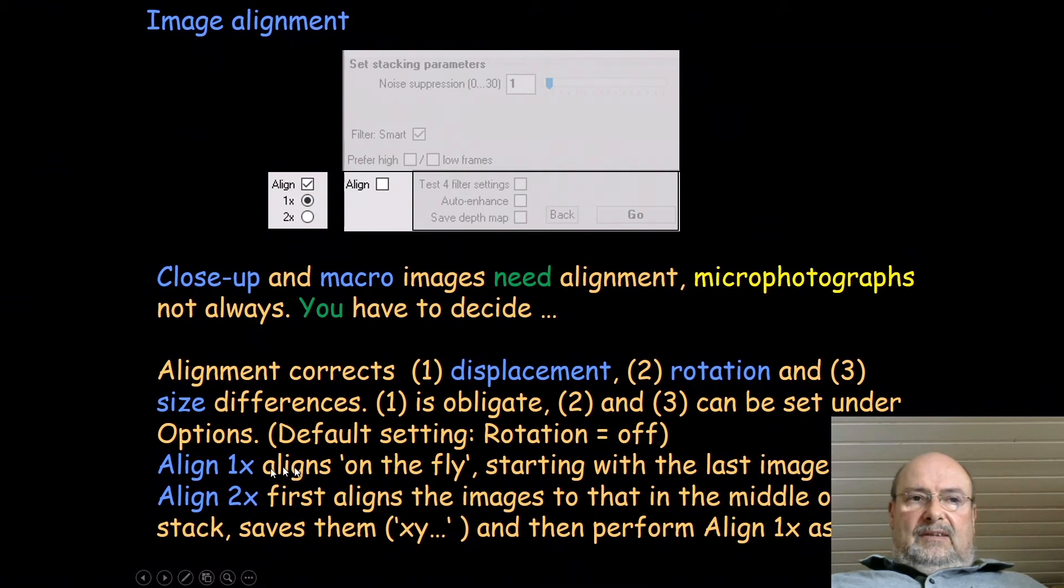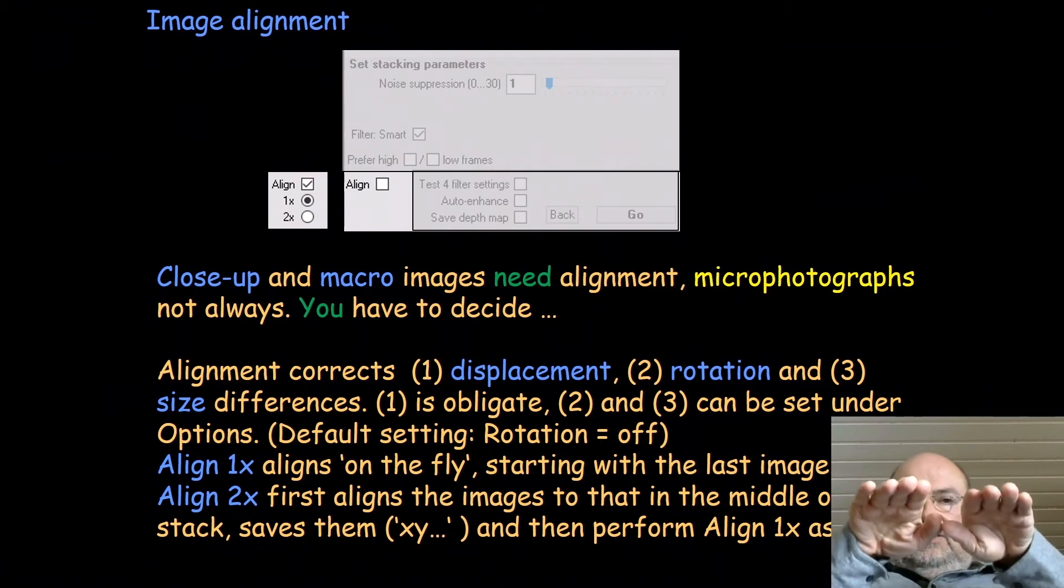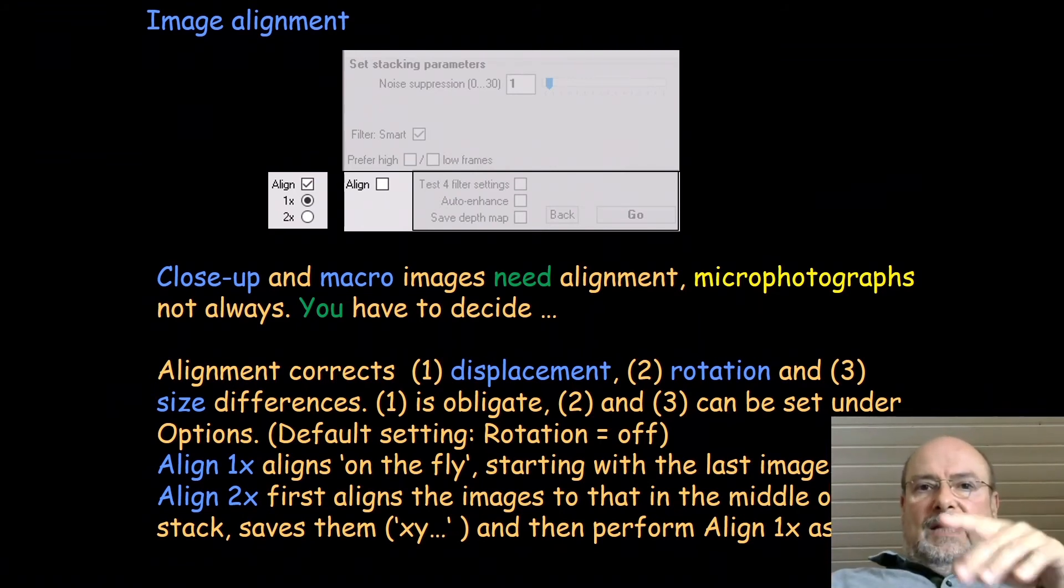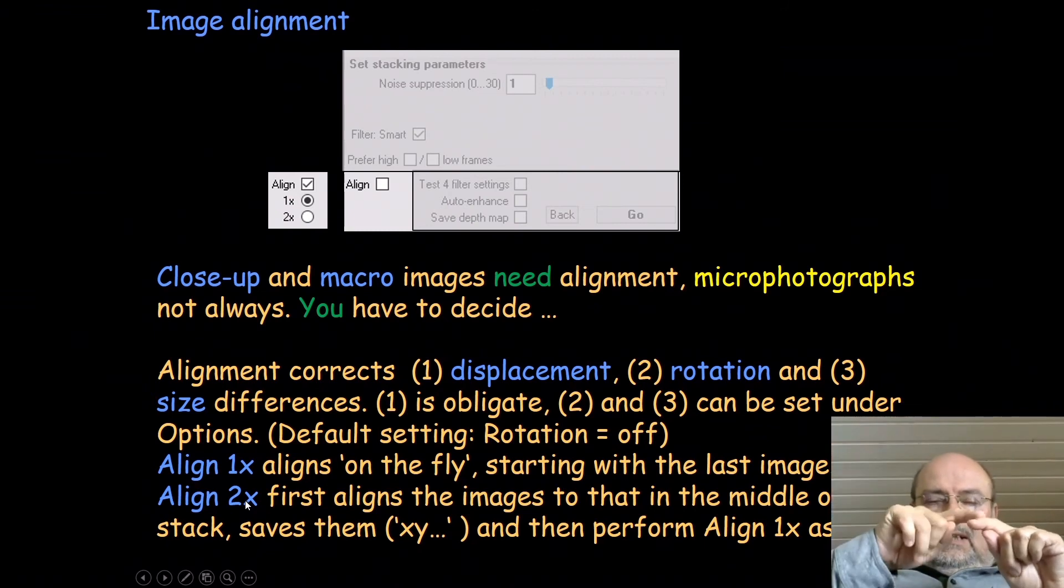There are two choices: either once or twice. If you do it one time, it does the alignment on the fly during stacking. Stacking starts with the last image and then the images are analyzed and everything is aligned to the last image. If you do it twice, there will be a first one where all the images are aligned to that in the middle of the stack. Then the results are saved with a new name and then align once is repeated as well. The advantage here is that the distances you have to cover are smaller if you start in the middle compared to the start at the end.